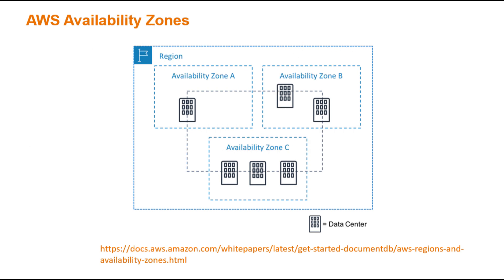To summarize the key concept learned from this practice question, let's look at a diagram on AWS availability zones. Availability zones are physically separate data centers within an AWS region, designed to provide high availability and fault tolerance. They are connected to each other through low latency links, allowing you to easily replicate data and distribute applications across multiple availability zones. By deploying your application across multiple availability zones, you can eliminate a single point of failure and increase the overall availability of your application.